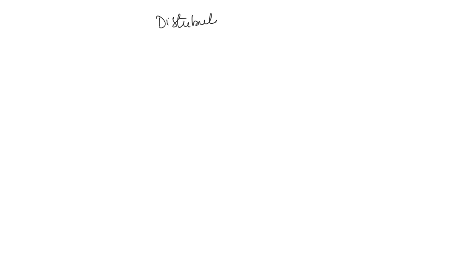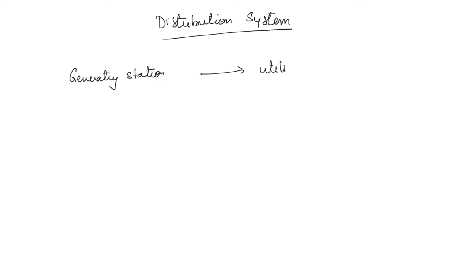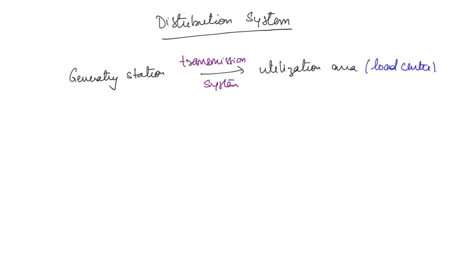So, till now we have discussed the transmission system. Now, what is the distribution system? The transmission system carries power over long distances from the generating station to the utilization area — that means the area where the customers are actually present. This transfer of power is done by the transmission system. The utilization area is often called the load center. The distribution system carries power from the load center to the actual customers.